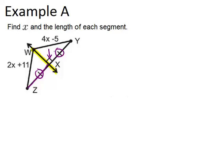So that means that W is the same distance away from Z as it is from Y. So WY is congruent to WZ. That means 2x plus 11 must equal 4x minus 5.